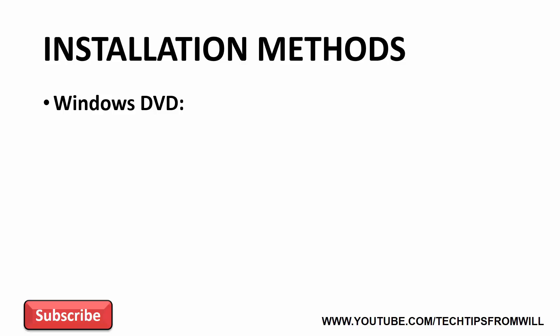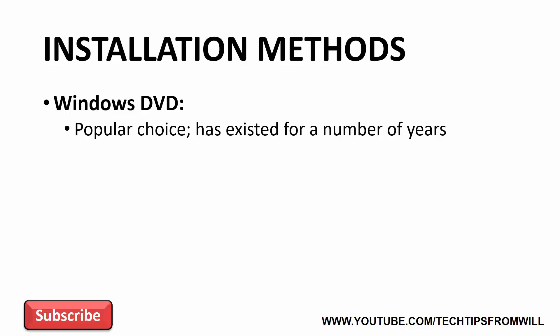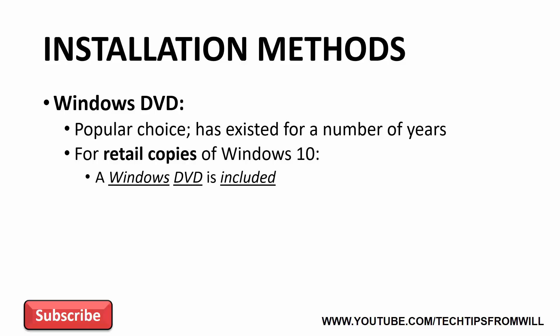The first install method I'll look at is the Windows DVD. Using a DVD to install Windows is a popular choice and is an installation method that's been around for a number of years. When you purchase a retail copy of Windows off the shelf, a DVD is usually included with that copy of Windows. You can then insert the DVD into the computer, boot to it and install Windows.